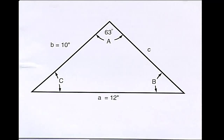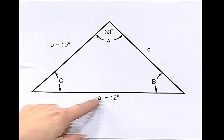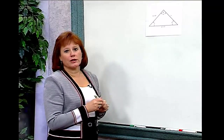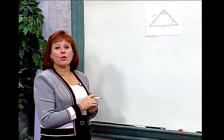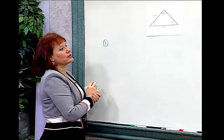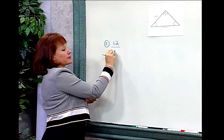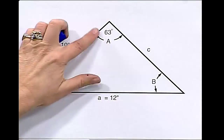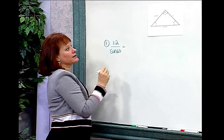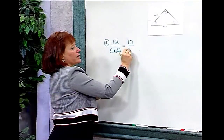The first thing we want to solve for is angle B. I can set up a ratio using the known values and match it with B and side B. Using the Law of Sines, I write 12 over sine 63 — the ratio between side A and the angle opposite — equal to 10 over the sine of B.